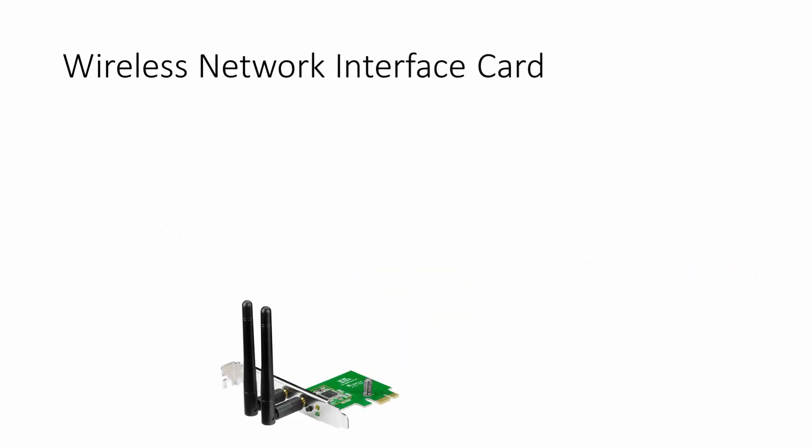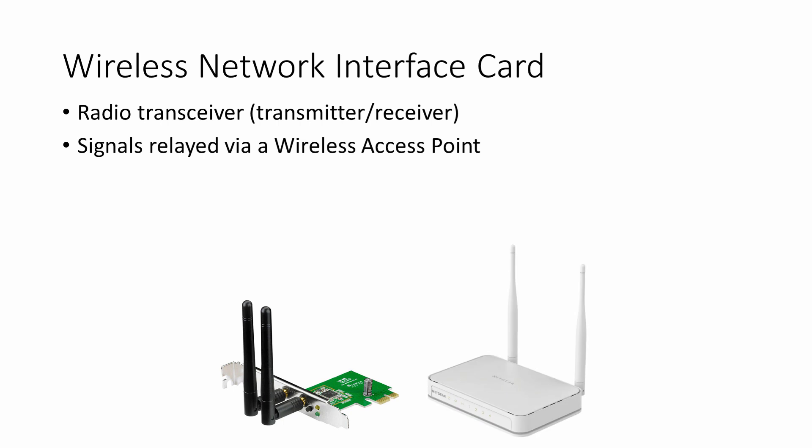Wireless network interface cards can send and receive data using radio signals instead of cables. These radio signals are relayed between computers via wireless access points, also known as hotspots. In a home, a wireless access point usually does the job of an internet router as well. Wireless networks are known as Wi-Fi networks. Wi-Fi stands for wireless fidelity.